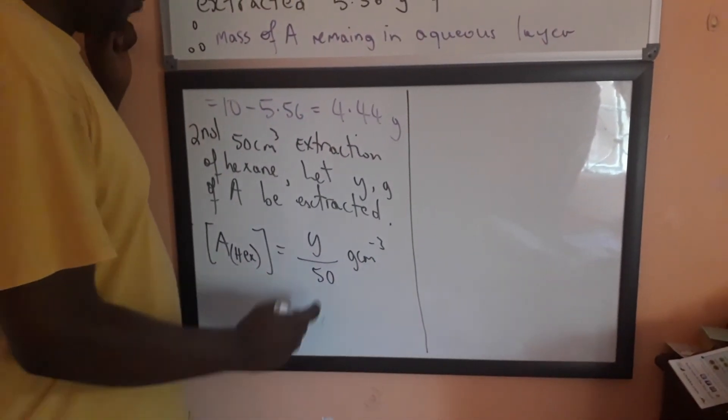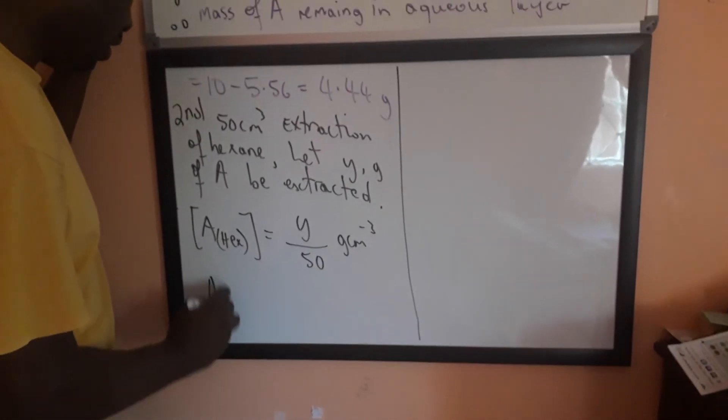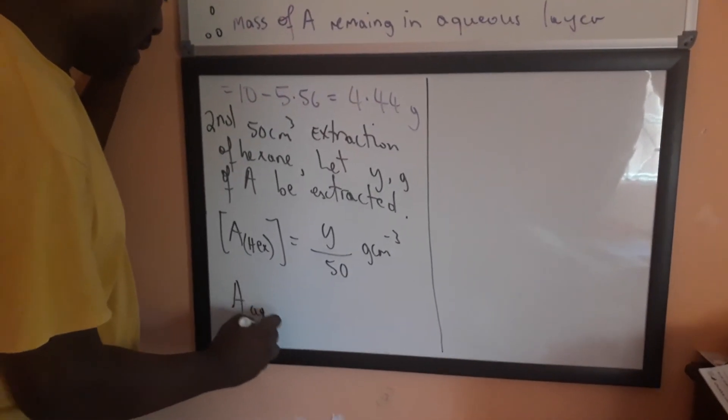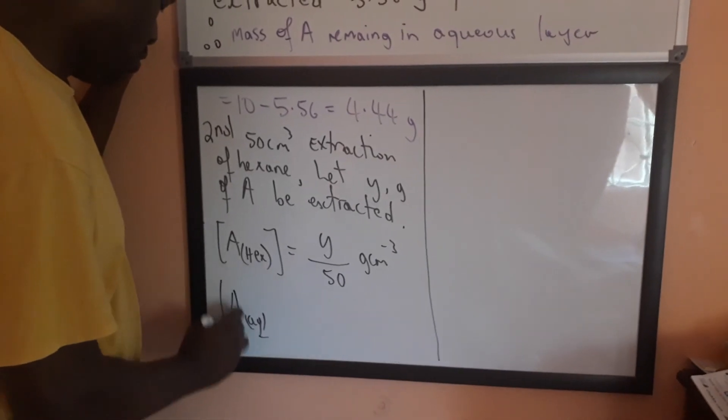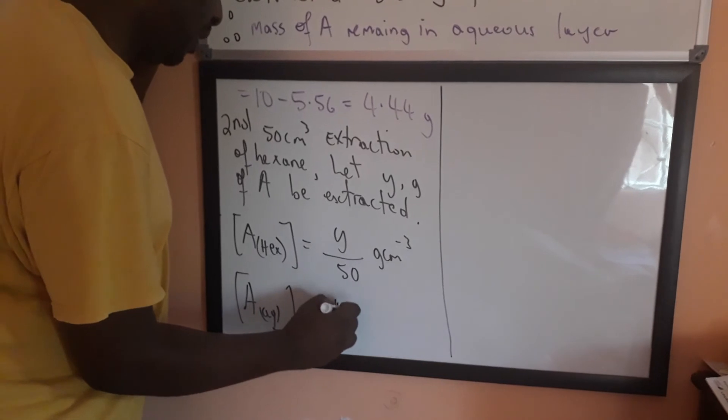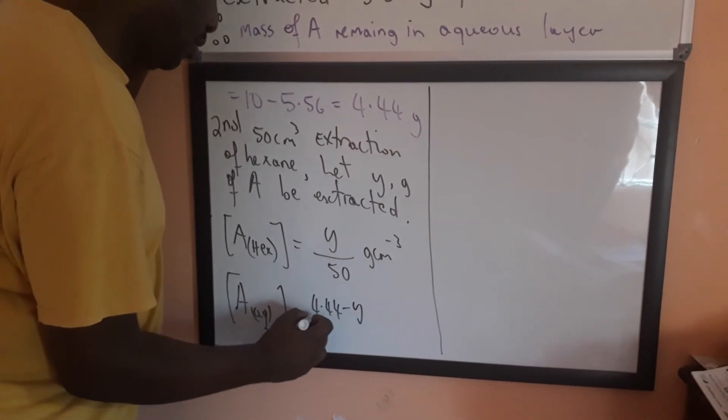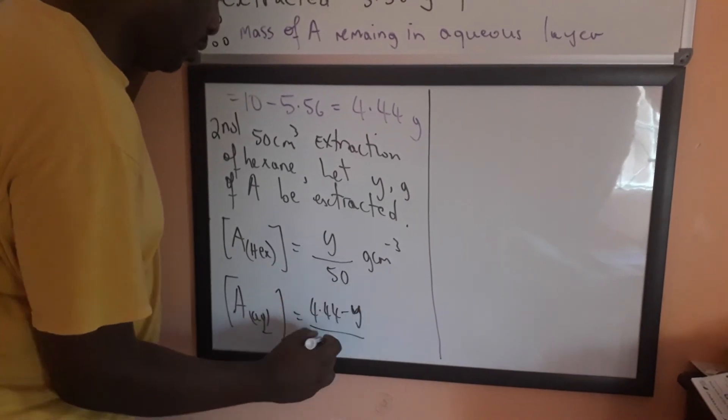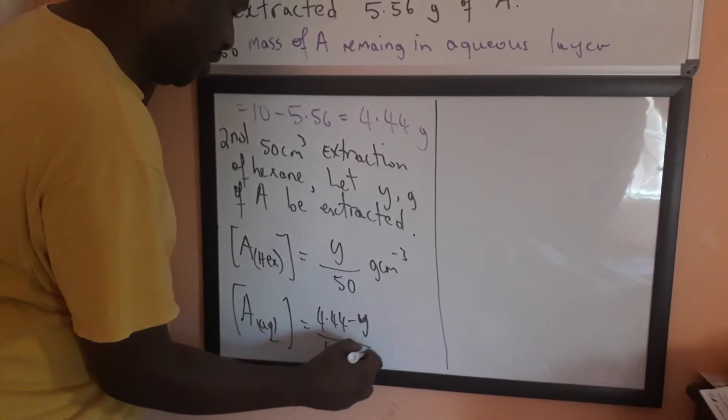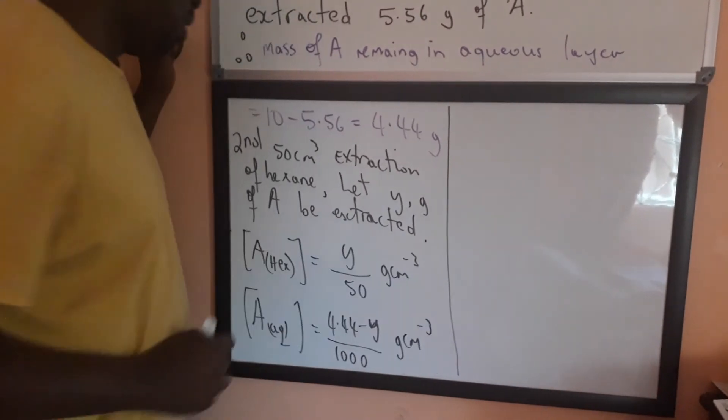So, Y grams, Y over 50 grams per cm cubed. And then, the concentration of A in aqueous solution would be how much you started with, 4.44 grams, minus Y, over the volume, which is 1,000 centimeter cubed.